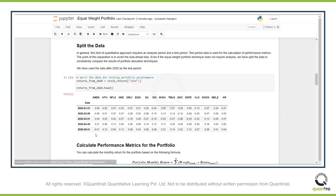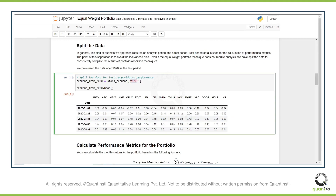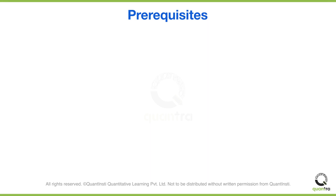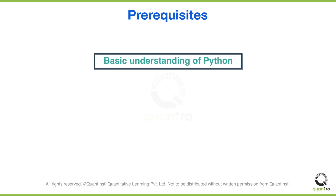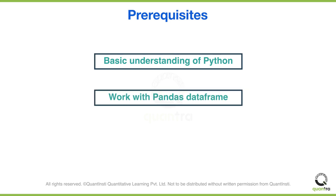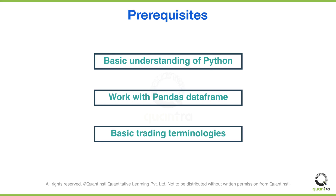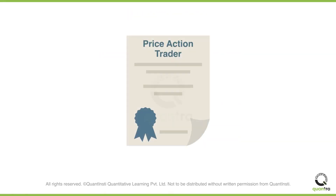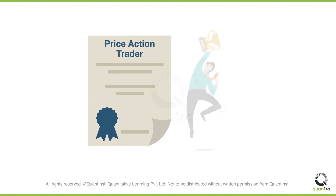We also encourage you to tweak and modify the code to truly make it your own trading strategy. In order to complete this course with ease, you need to have a basic understanding of Python and be able to work with Pandas DataFrames. You also need to be aware of the basic trading-related terminologies such as long, short, stop-loss, take-profit levels, etc. Any familiarity with using charting and trading platforms would prove to be an added advantage. So what are you waiting for? It's time to begin this journey towards becoming a skilled price action trader.